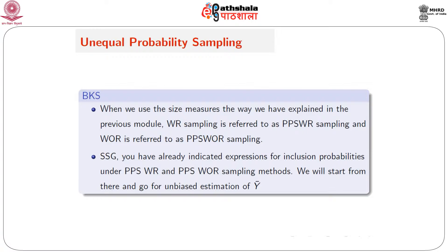In the context of unequal probability sampling using a probability vector p, when we use the size measures in the form of norm size measures p1, p2, ..., pn as explained in the previous module, with replacement sampling is referred to as probability proportional to size with replacement sampling, abbreviated as PPSWR. Similarly, the other one is probability proportional to size without replacement sampling, referred to as PPSWOR.